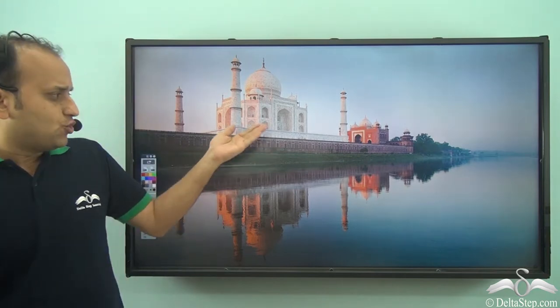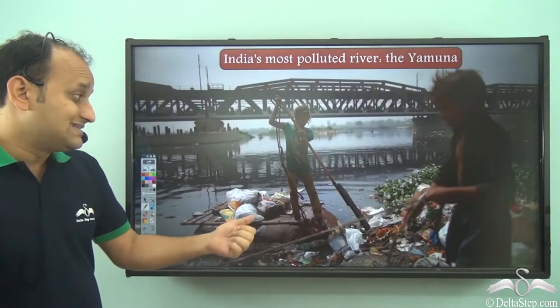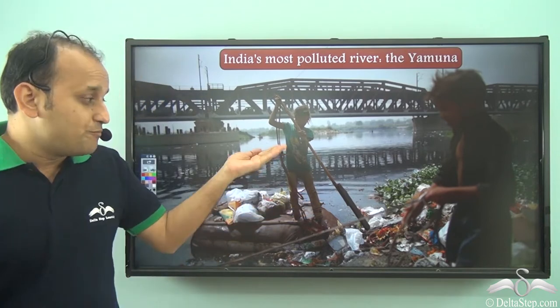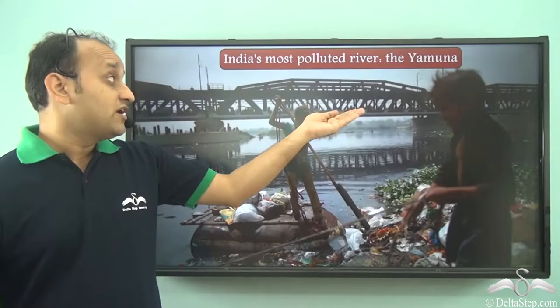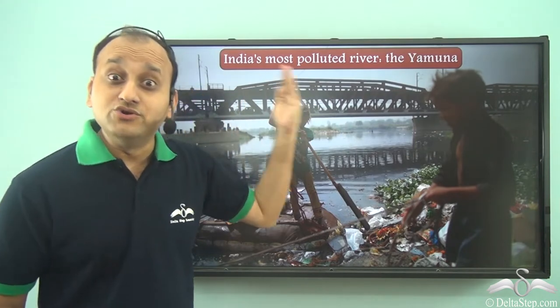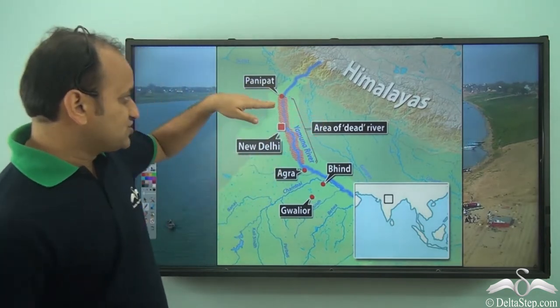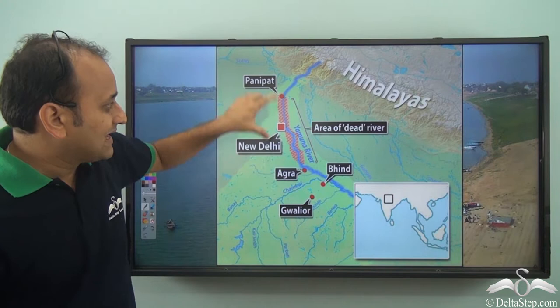What do we see here? We see the Taj Mahal and the Yamuna River flowing beside it. Both are so beautiful — the river as well as the monument. However, this river is not as beautiful along its entire stretch. This is the same Yamuna River in Uttar Pradesh — can you see how polluted it is? In fact, the Yamuna River is the most polluted river in India.